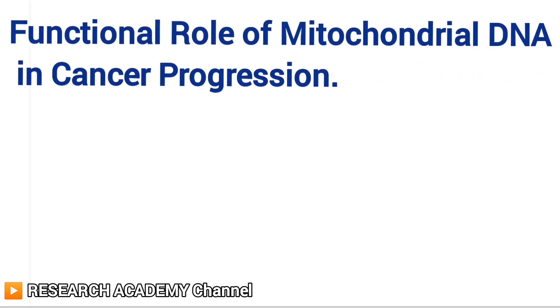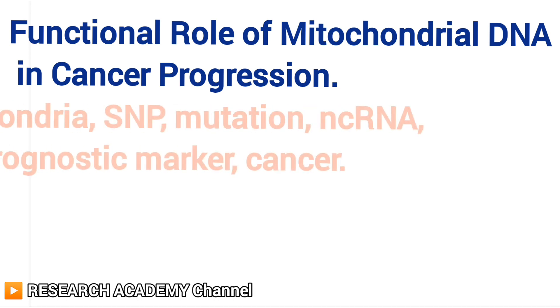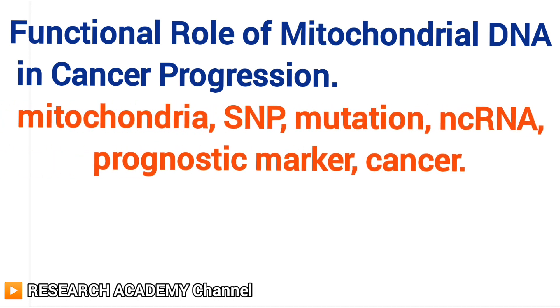For example, if my paper title is 'Functional Role of Mitochondrial DNA in Cancer Progression,' I will use six keywords like: Mitochondria, SNP, Mutation, NCRNA, Prognostic Marker, Cancer.